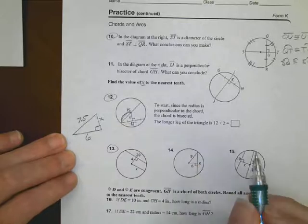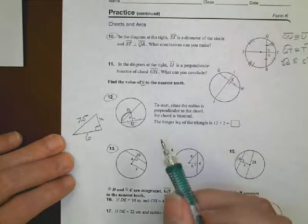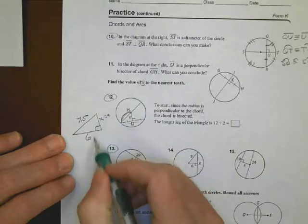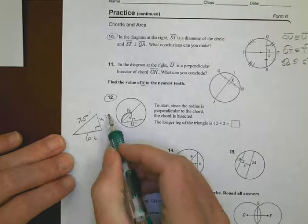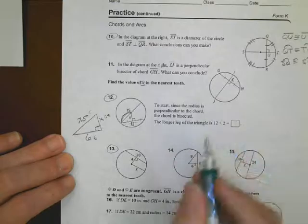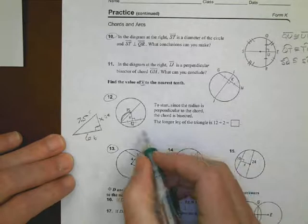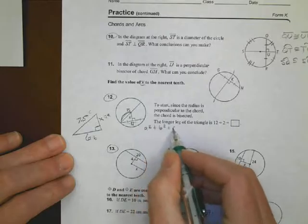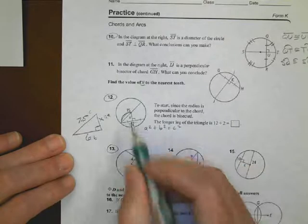So now I have a triangle, a right triangle, with an A, a B, and a C. So I'm going to use the Pythagorean Theorem, A squared plus B squared equals C squared, to solve this. A squared plus B squared equals C squared, in order to determine what is the value of X.